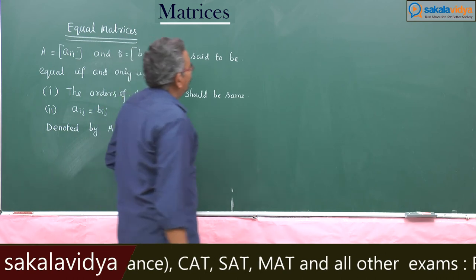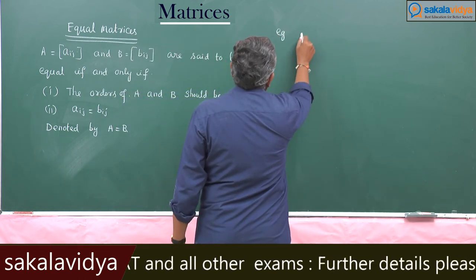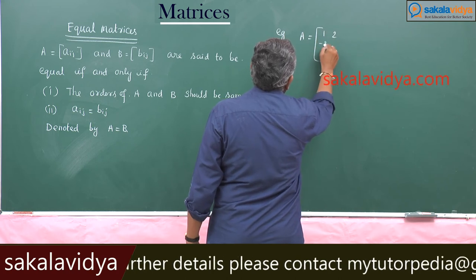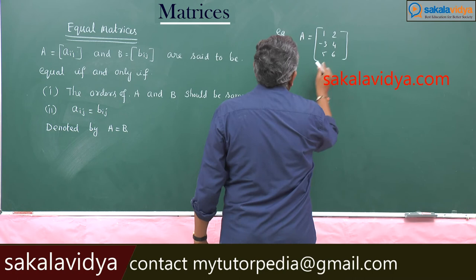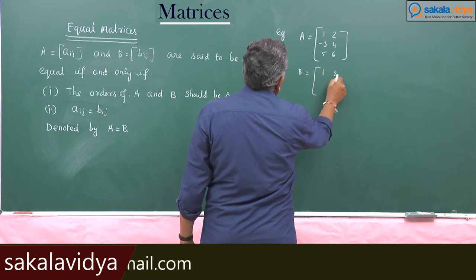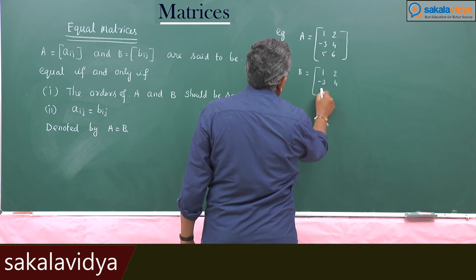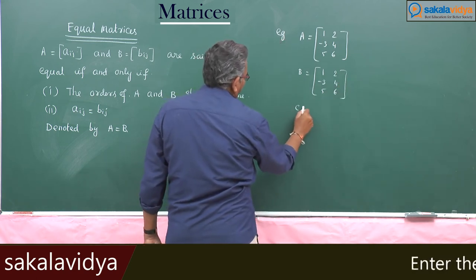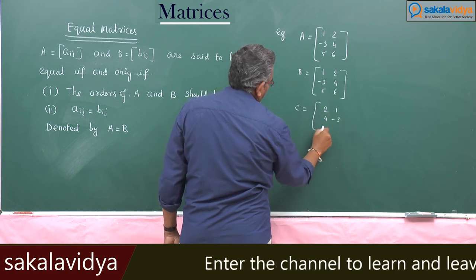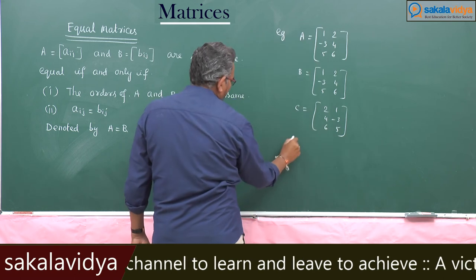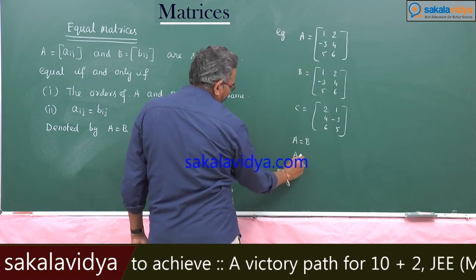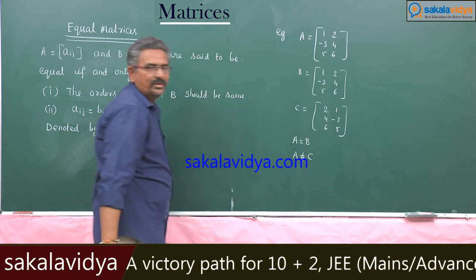Example: A = [1, 2, -3; 4, 5, 6], B = [1, 2, -3; 4, 5, 6], and C = [2, 1; 4, -3; 6, 5]. Here, A is equal to B. If you want to compare A and C, A does not equal C — they are not equal.